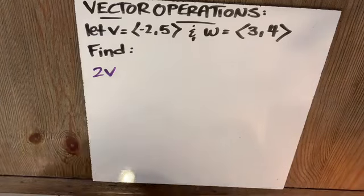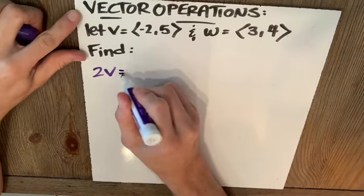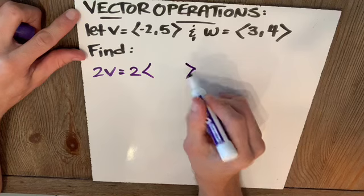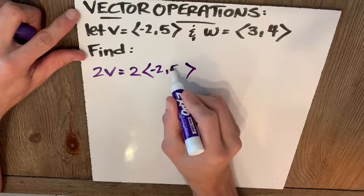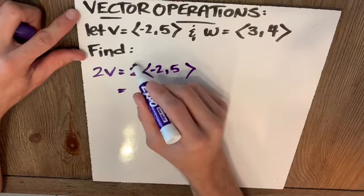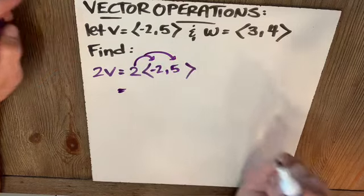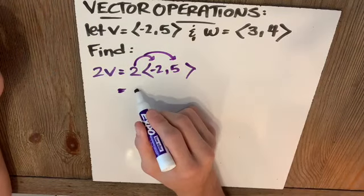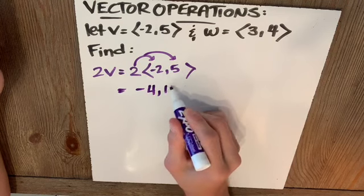Find 2V. The math is pretty simple. That's a scalar 2 times the vector V, which is negative 2, 5. Remember, what we want to do is multiply that scalar by both the X component and the Y component to give us negative 4, 10.